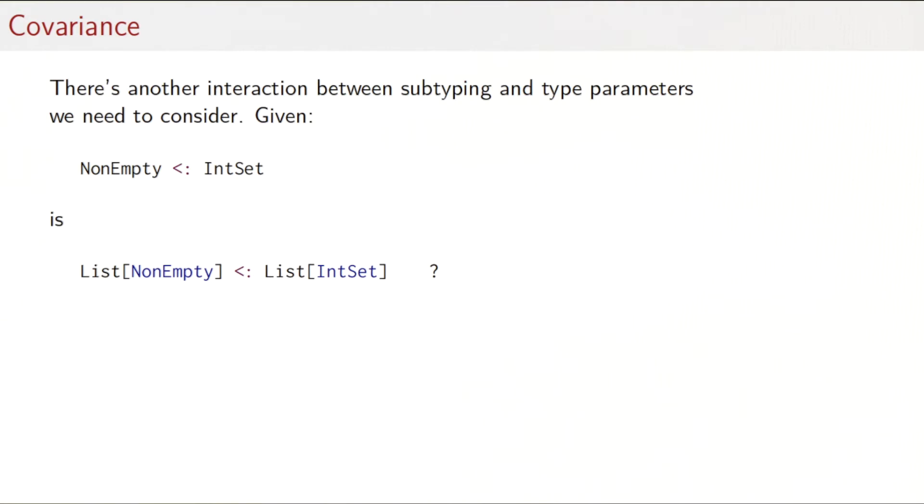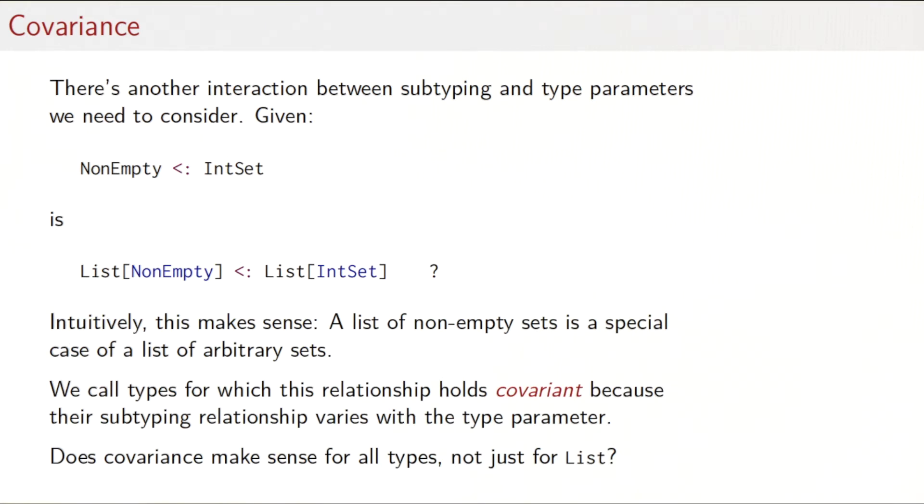So now that we've looked at bounds, there's still another thing to consider. We know that NonEmpty is a subtype of IntSet. What about if we wrap both types in a list? Should a list of NonEmpty also be a subtype of list of IntSet? Intuitively, this makes sense. A list of non-empty sets is obviously a special case of a list of arbitrary sets. So from a domain modeling perspective, list of NonEmpty should indeed be a subtype of list of IntSets. We call types for which this relationship holds covariant because the subtyping relationship varies exactly like the type parameter.